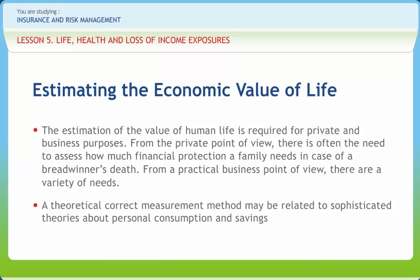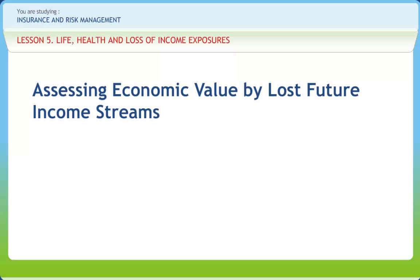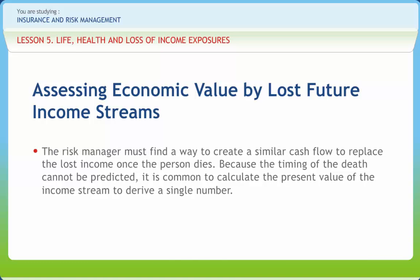In principle, there are two alternative ways to estimate the value. One is to estimate the value of the income stream that the deceased person would have had if she or he had survived. The alternative is to estimate the financial needs of the surviving dependents. The forecast should be limited to a certain period, say an expected retirement age, when income streams are expected to discontinue. The risk manager must find a way to create a similar cash flow to replace the lost income once the person dies.